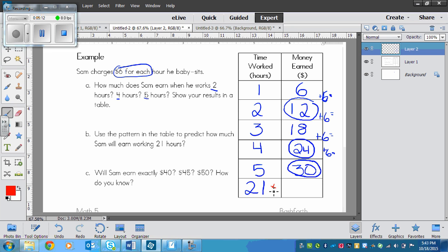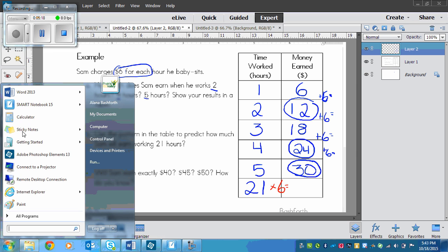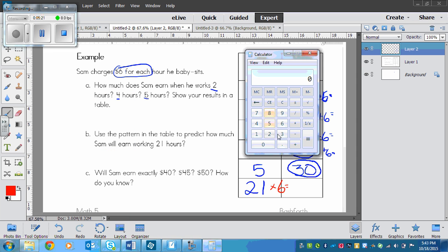So if we go 21 times 6, now if you need to use your calculator for this then that's okay. You could use your calculator. 21 times 6 equals 126.